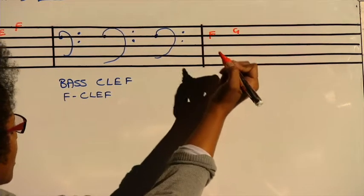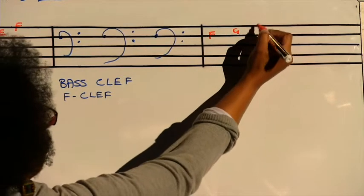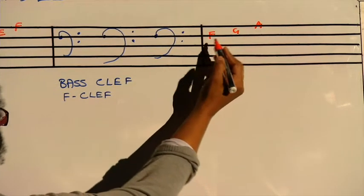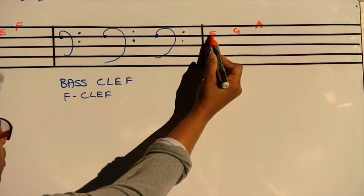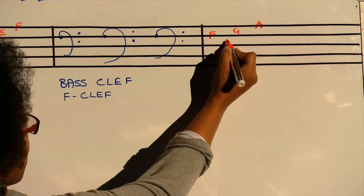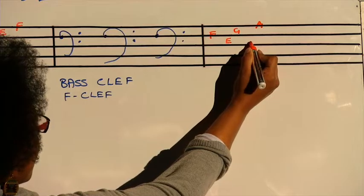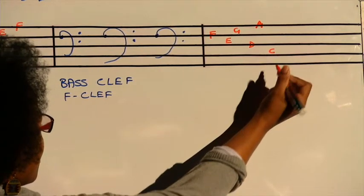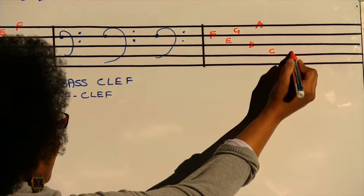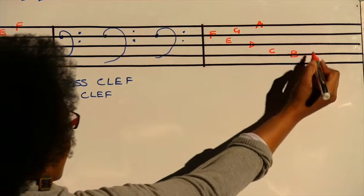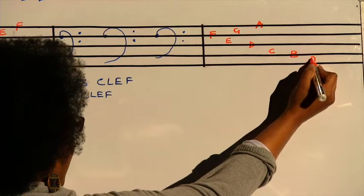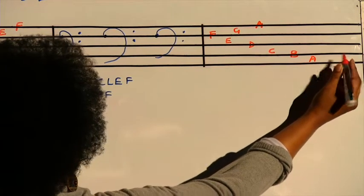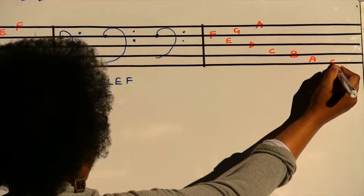Then we go backwards from F. It's going to be F, the space will be E, the line D, the space C, the line B, the space A, then the last line of the bass clef is a G.